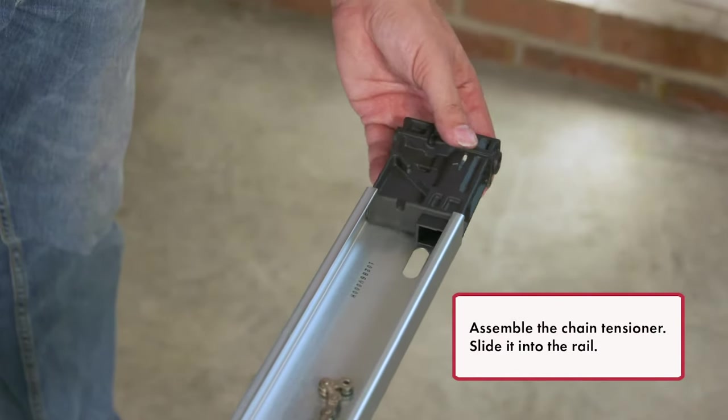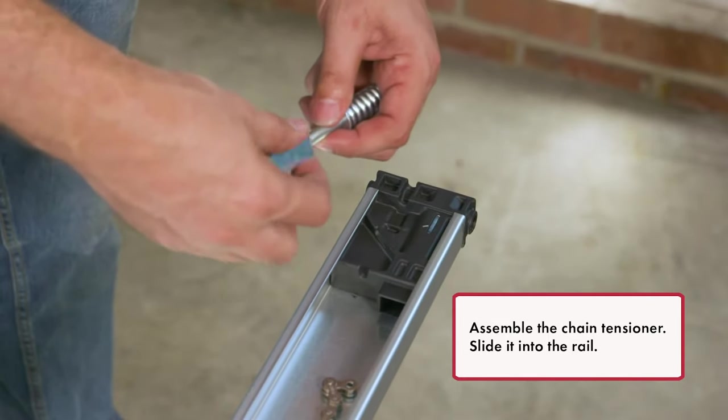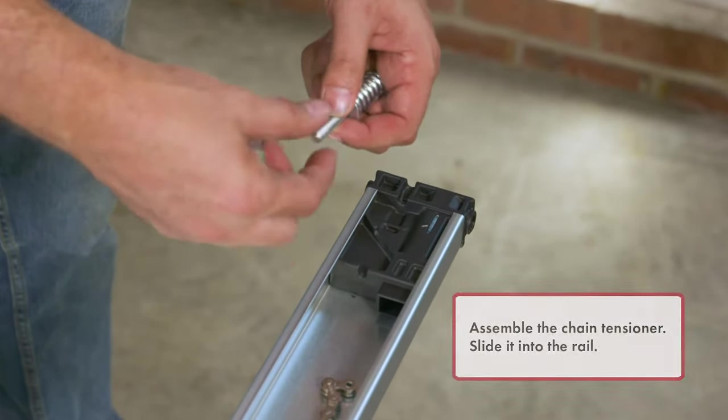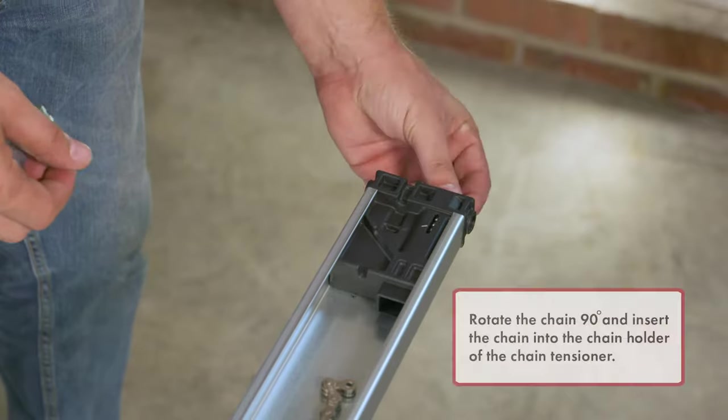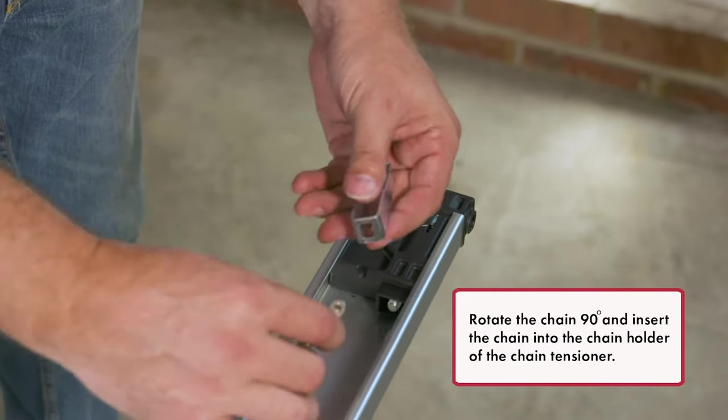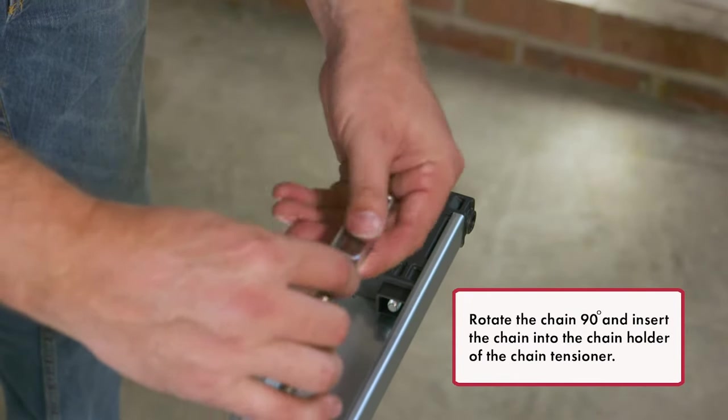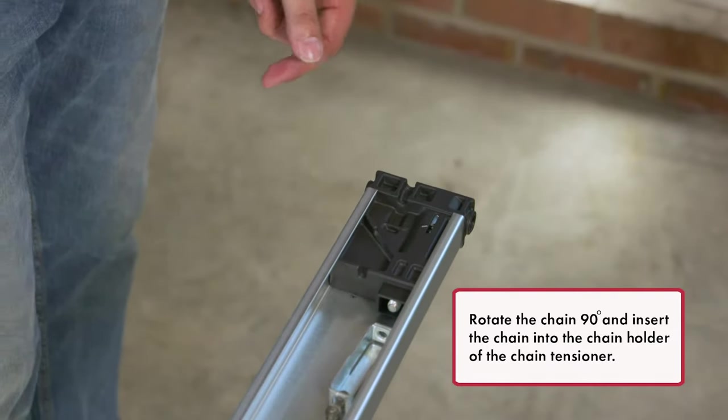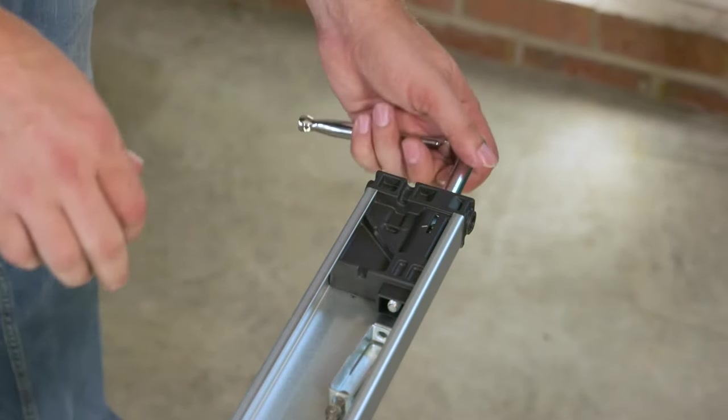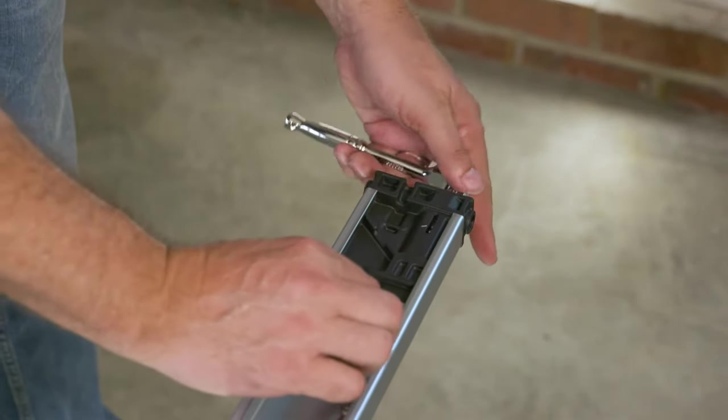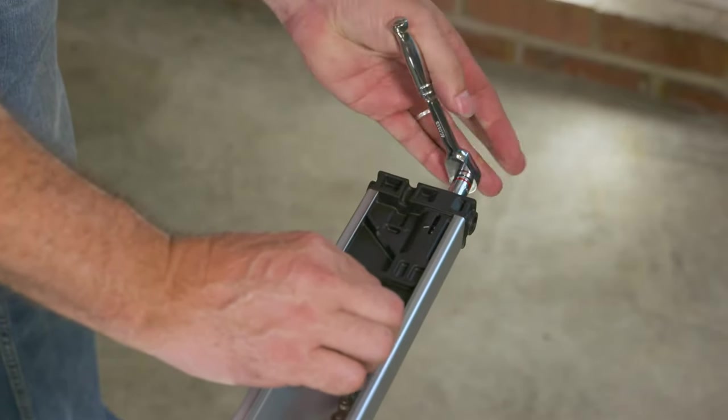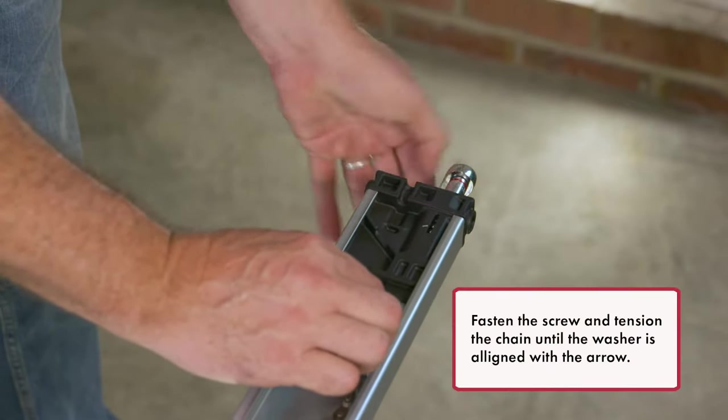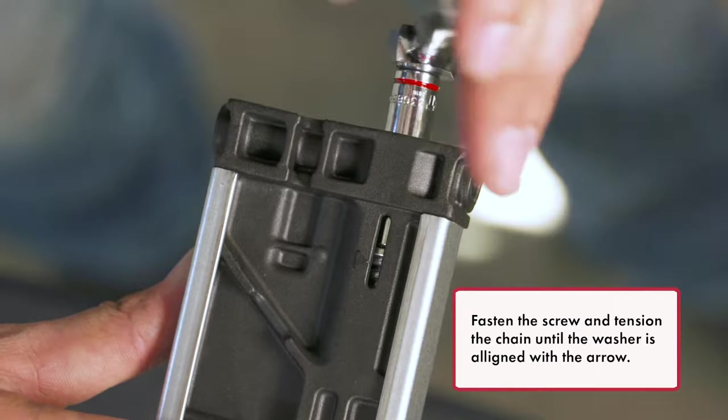Assemble the chain tensioner and slide it into the rail. Rotate the chain 90 degrees and insert the chain into the chain holder of the chain tensioner. Fasten the screw and tension the chain until the washer is aligned with the arrow.